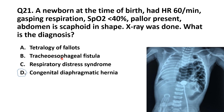Tracheoesophageal fistula — I have already explained this in MCQ 20 — how the newborn will present with frothing from the mouth, dribbling after feeds, and respiratory distress. In tracheoesophageal fistula, when you insert a nasogastric feeding tube, there will be a curl of the tube visible in the proximal part of the esophagus. So it is not the diagnosis here.